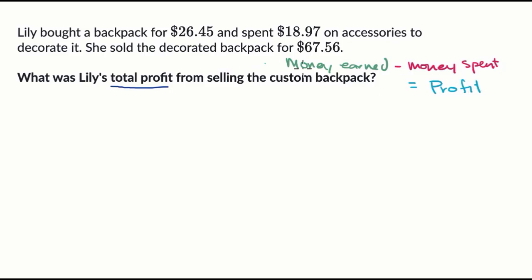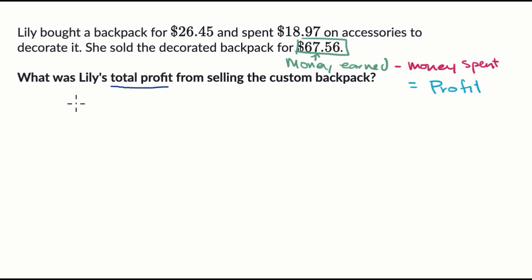What you need to do is figure out what's the money earned and what's the money spent, then subtract them. The money earned in this situation is what she sold the backpack for — that's what she got. So the money earned is $67.56.